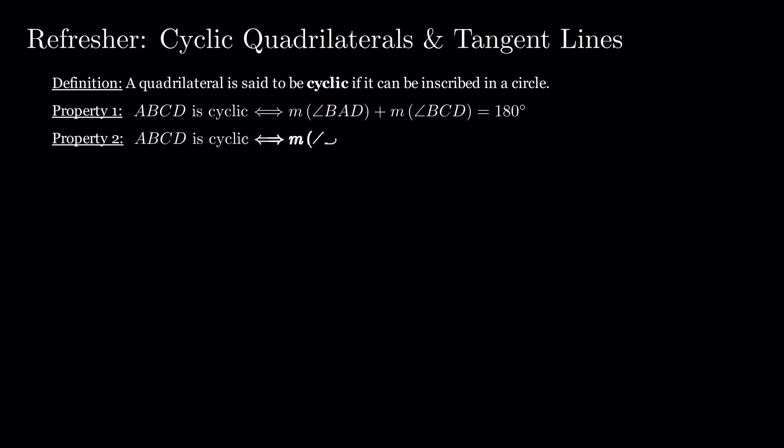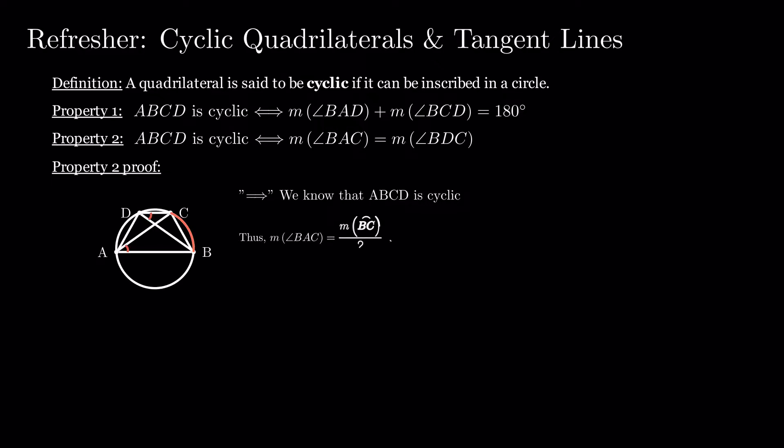ABCD is cyclic if and only if the angles that the diagonals form with two opposite sides are equal. Let's consider these angles to be BAC and BDC. Let's start with the first implication. We know that ABCD is cyclic. Then, BAC's measure is half of the measure of the arc BC and BDC's measure is half of the measure of arc BC. So, BAC equals BDC.